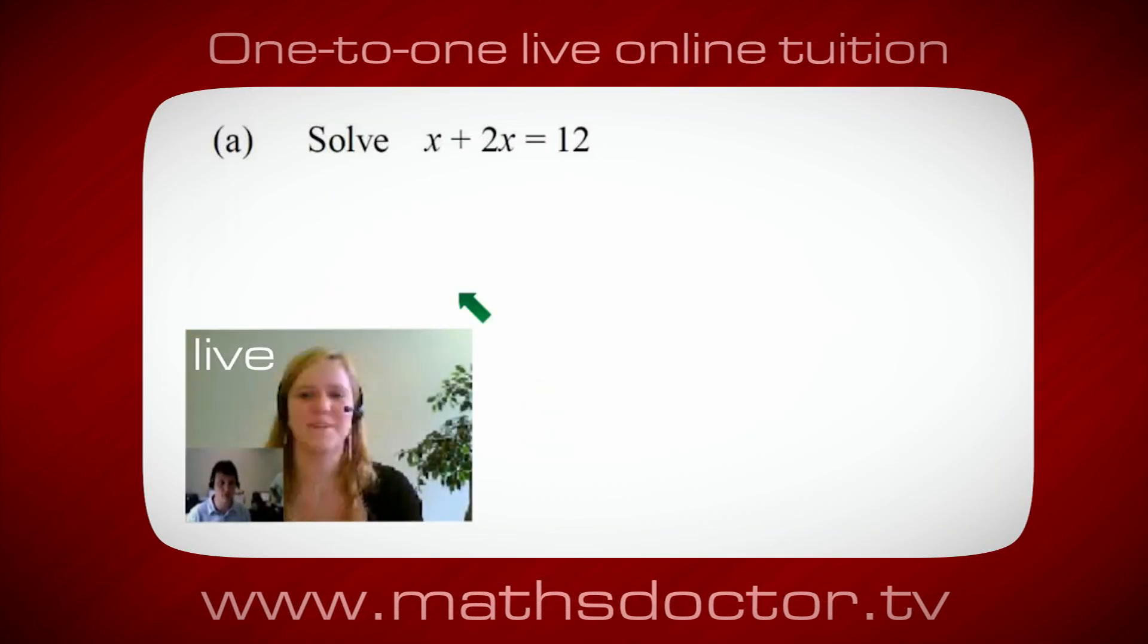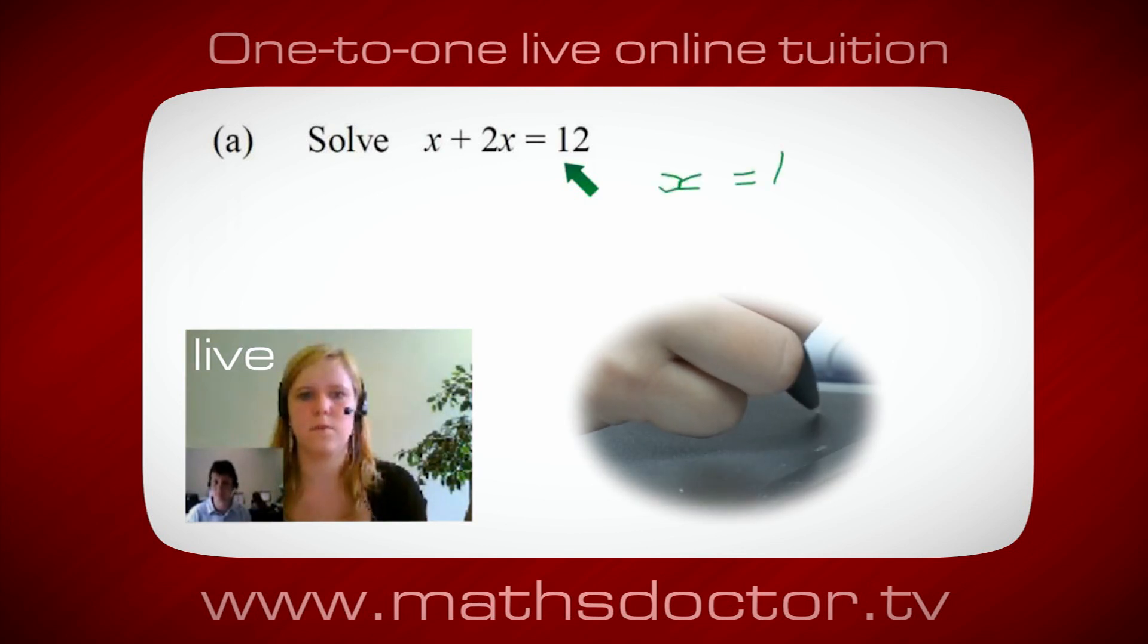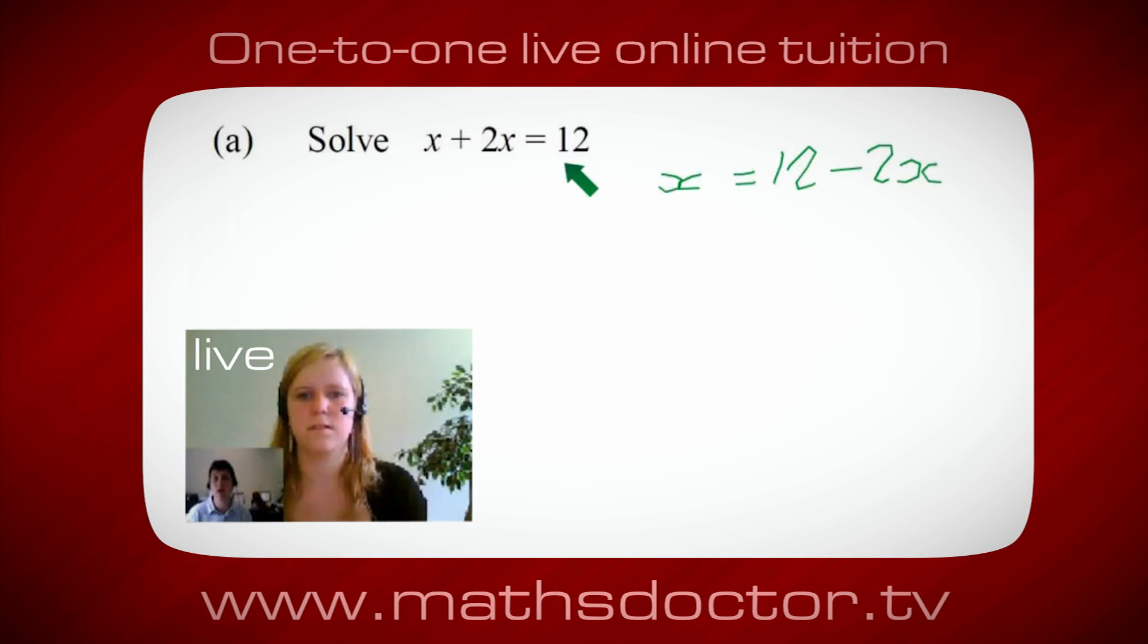OK, Marie, so let's have a look at this one. Solve x plus 2x equals 12. So what do you think you do first? OK, well, I want x on its own. So I would put x equals 12 minus 2x. OK, so a lot of the time we want to get x by itself. But what we want to do first is get all of these x's together. So can you see anything we can do with this? Get all these together in one place.